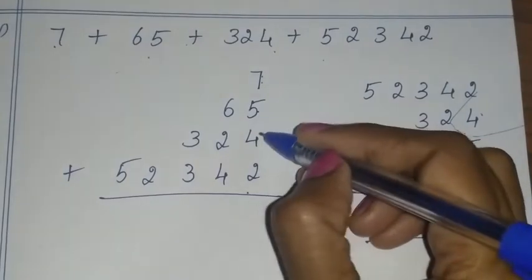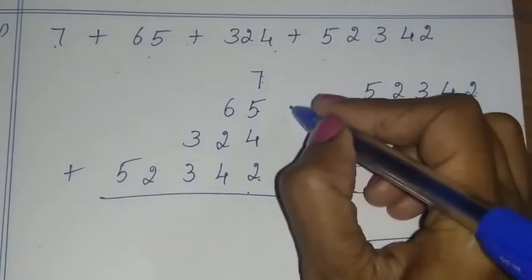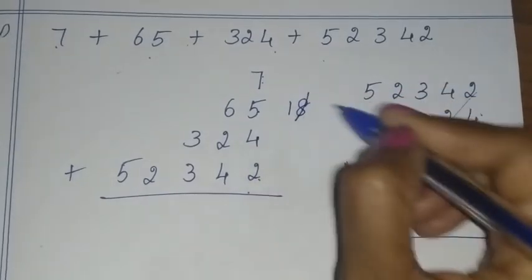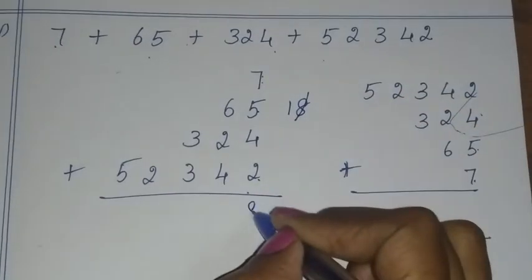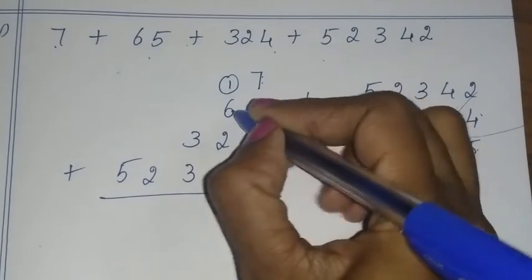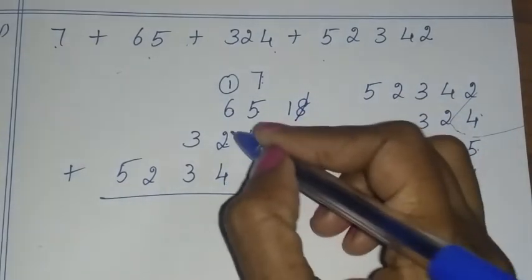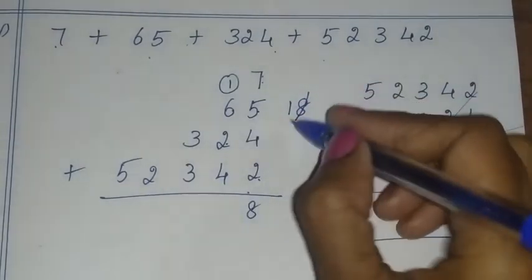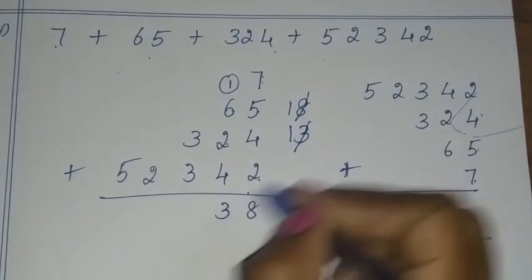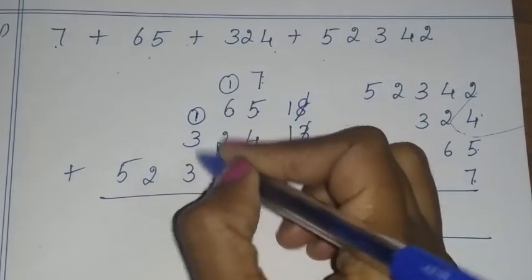7 plus 5 is 12, 12 plus 4 is 16, 16 plus 2 is 18 — a 2-digit number. So 18: write the ones place and carry over 1. 1 plus 6 is 7, 7 plus 2 is 9, 9 plus 4 is 13 — again a 2-digit number. So write 3, carry over 1.